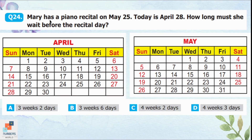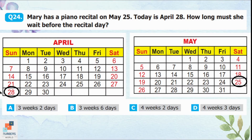Question 24: Mary has a piano recital on May 25 and today is April 28. How long must she wait? Counting from April 28 through May 25: April 28, 29, and 30 fill out the remaining days of April, then counting through May gives three complete weeks and six additional days. So she must wait three weeks and six days — option B is correct.